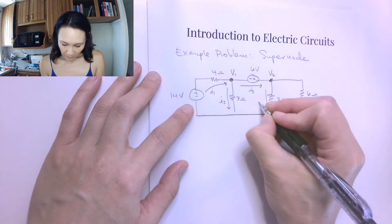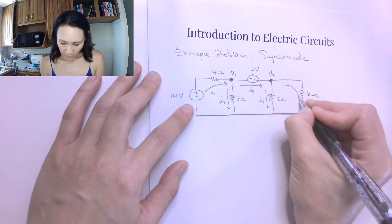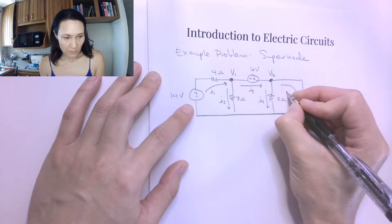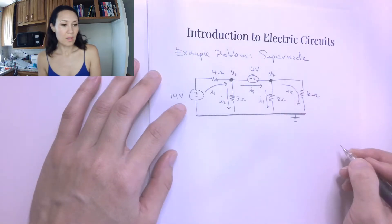The current that takes the path through this resistor, this can be I4. And then that comes around this loop, let's let this be I5.